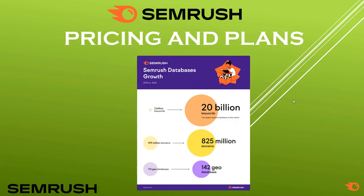Before we go ahead, let's look at the major impact on the SEMrush databases. Comparing 2018 to 2020, there were only 2 billion keywords in the SEMrush database in 2018, and this has been updated to 20 billion keywords in 2020.